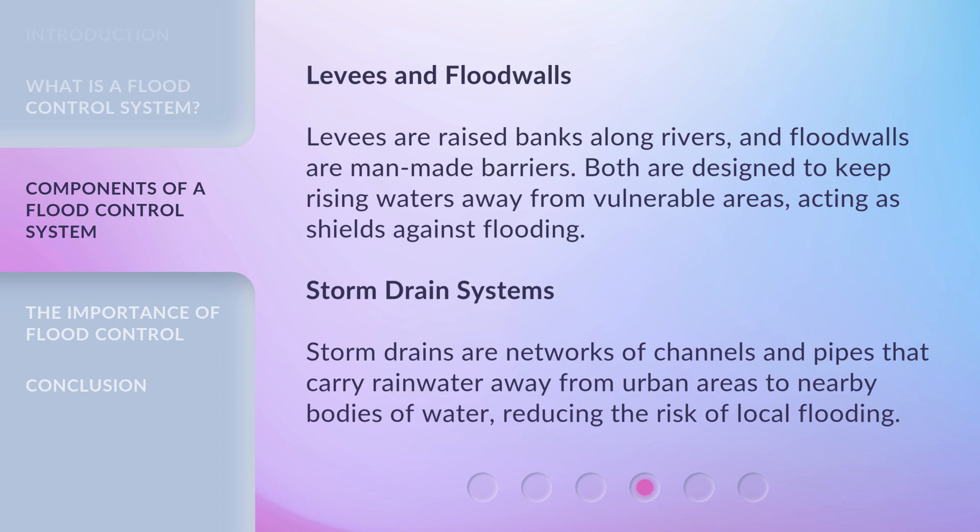Storm Drain Systems: Storm drains are networks of channels and pipes that carry rainwater away from urban areas to nearby bodies of water, reducing the risk of local flooding.